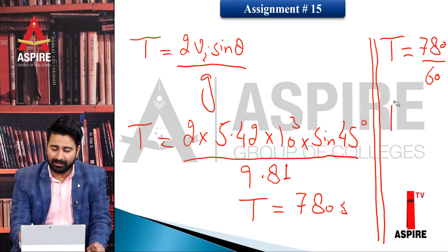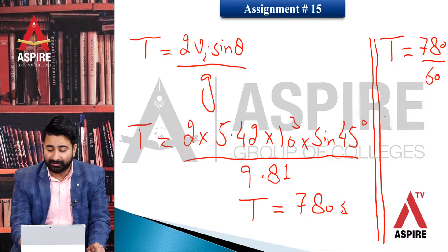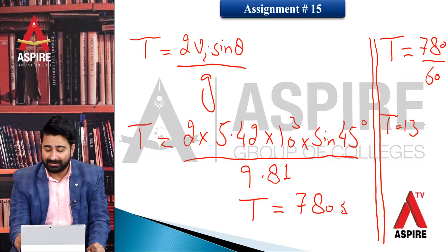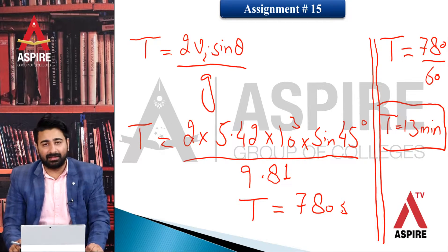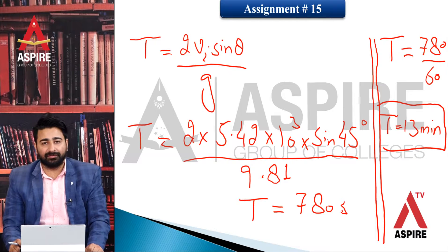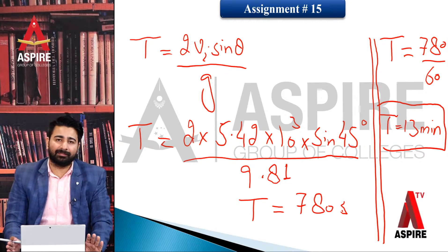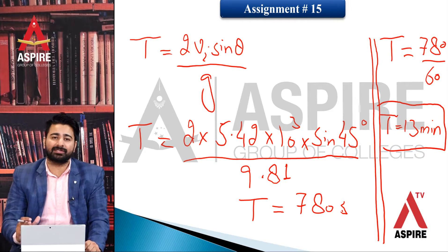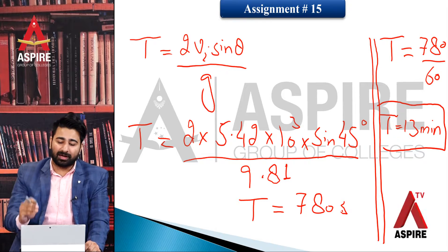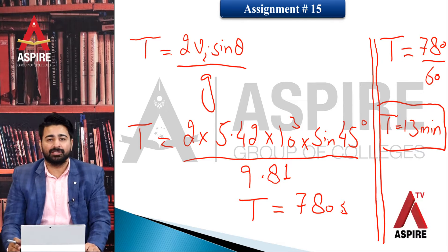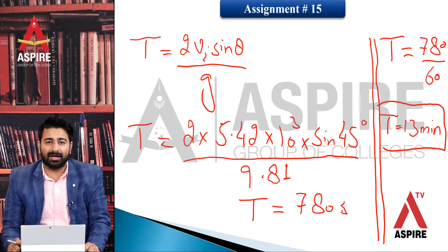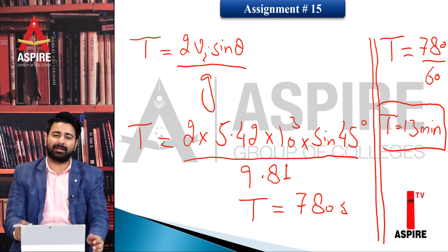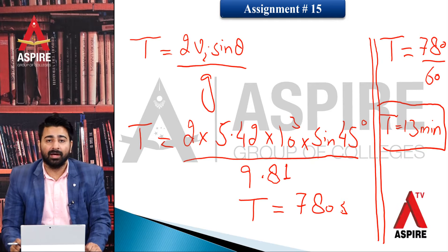ایسے ballistic missile جس کی initial velocity 5.42×10³ m/s ہو، اس کو زمین سے launch ہو کر واپس ground تک پہنچنے میں 13 منٹ لگیں گے۔ Students، یہ ہمارا last lecture تھا جس میں ہم نے assignment number 14 اور 15 کا مکمل work solution کیا۔ Assignment 14 projectile motion سے متعلق تھی جس میں top پر kinetic energy evaluate کی، اور assignment 15 textbook کا 15واں numerical تھا جس میں initial velocity اور time of flight of ballistic missile find کی۔ یہاں conclude کرتا ہوں، انشاءاللہ۔